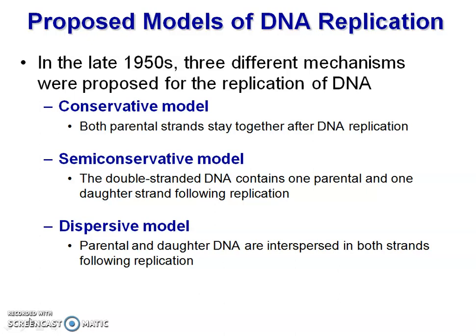In the semi-conservative model, one parental strand acts as a template for the synthesis of a newly formed daughter strand. The older cell retains one parental strand and one newly synthesized strand, and the new cell retains the other parental strand paired with a newly synthesized strand. In the dispersive model, parental and daughter DNA are interspersed in both strands following replication.